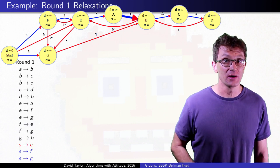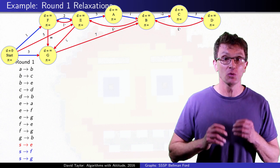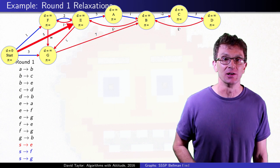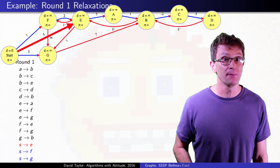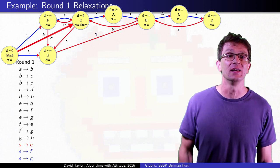When we relax all of the edges once, we start with a bunch of useless relaxations until we relax the start to E edge. That edge isn't on the tree, but it does successfully change a value. I will color it red in the list.